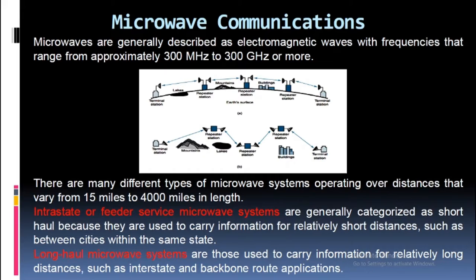Intrastate or feeder service microwave systems are generally categorized as short-haul because they are used to carry information for relatively short distances, such as between cities within the same state. Long-haul microwave systems are those used to carry information for relatively long distances, such as interstate and backbone route applications.